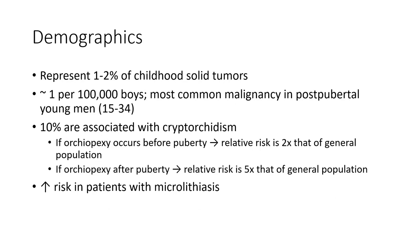Demographically, testicular tumors represent 1 to 2% of childhood solid tumors, around 1 per 100,000 boys. They are the most common malignancy in post-pubertal males. Around 10% are associated with cryptorchidism. If orchidopexy occurs before puberty, the relative risk is 2 times that of the general population. If orchidopexy occurs after puberty, the relative risk is 5 times that of the general population. There is also increased risk in patients with microlithiasis.